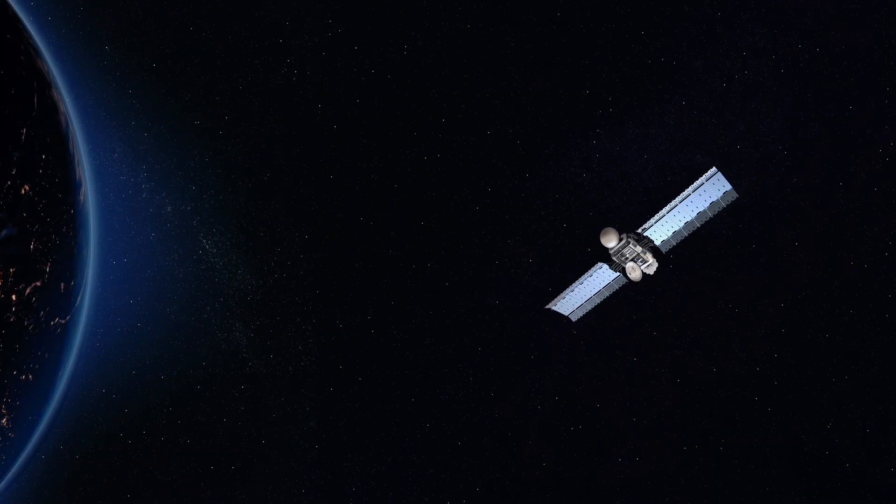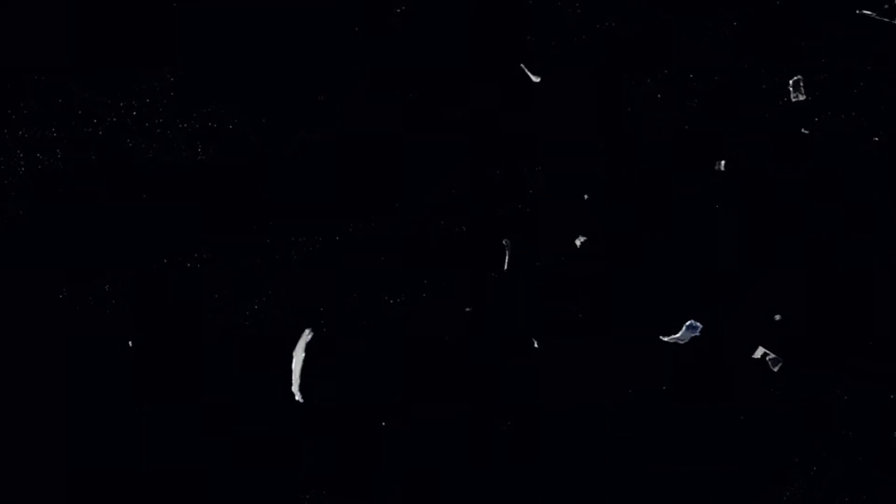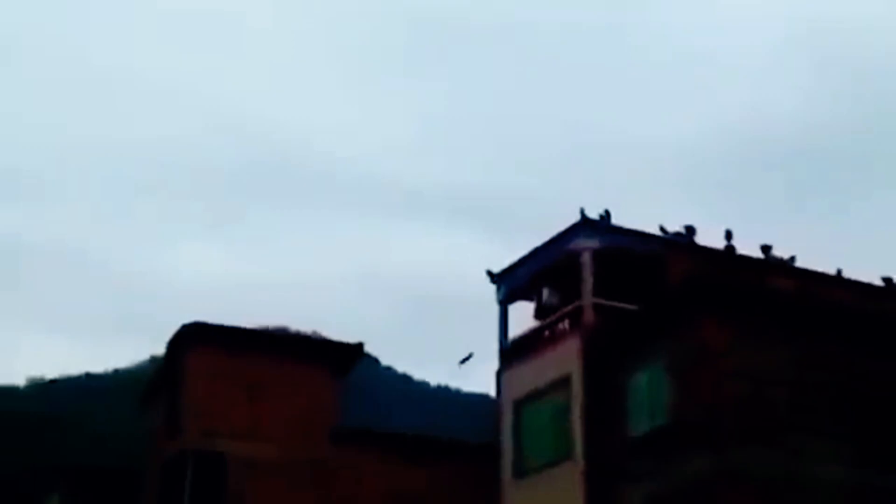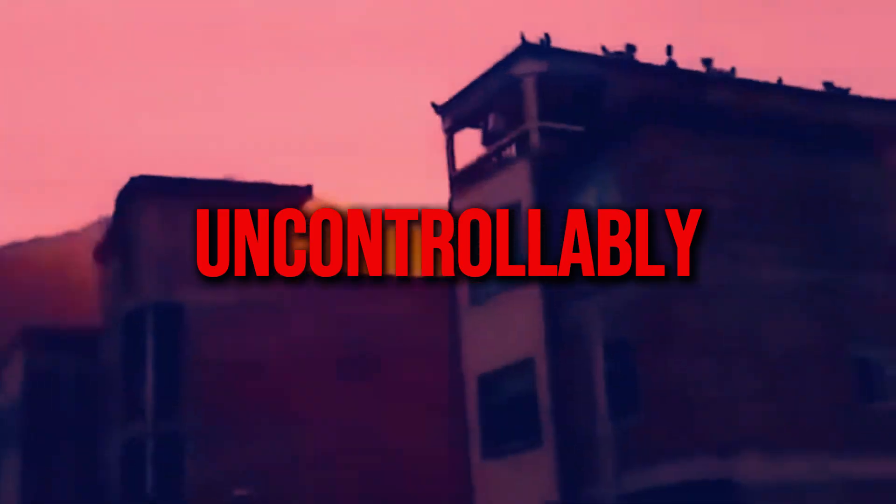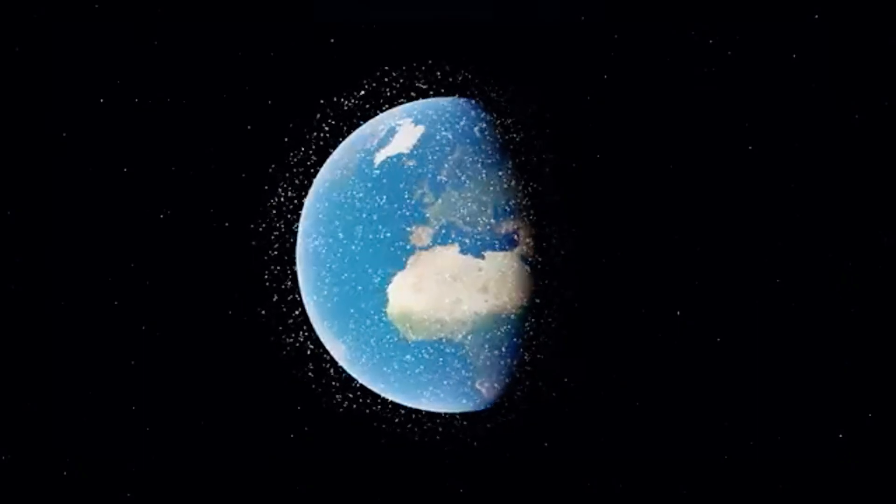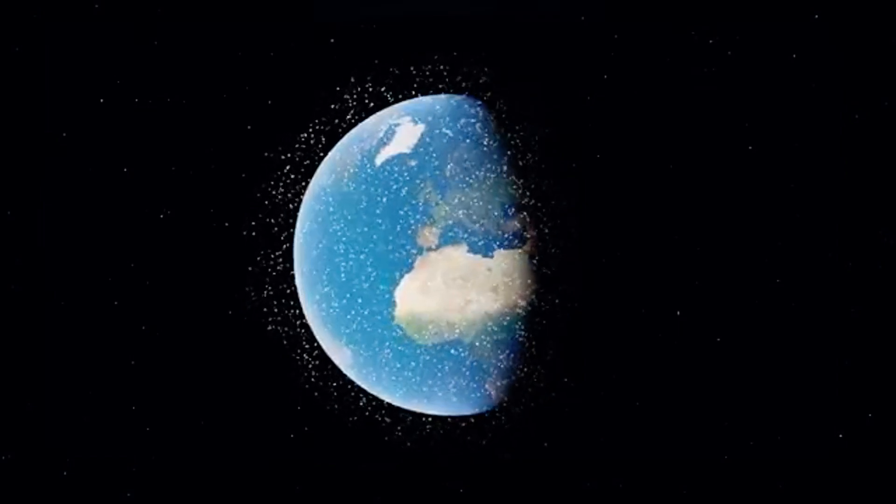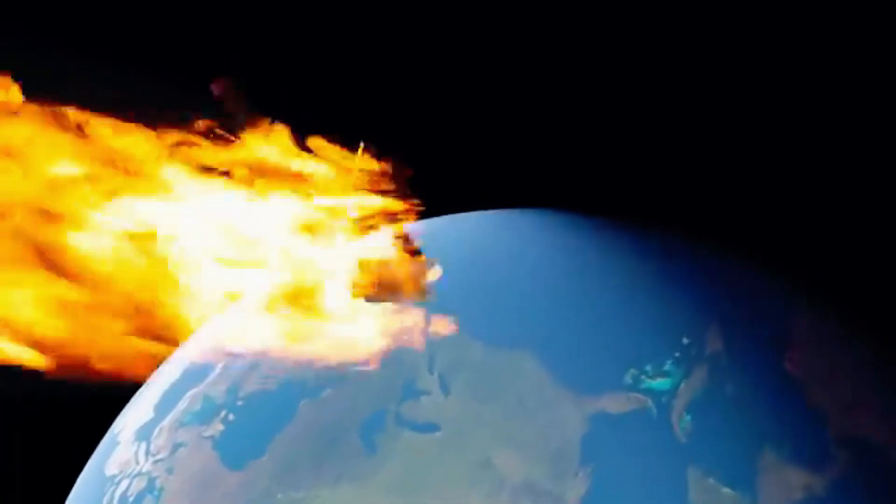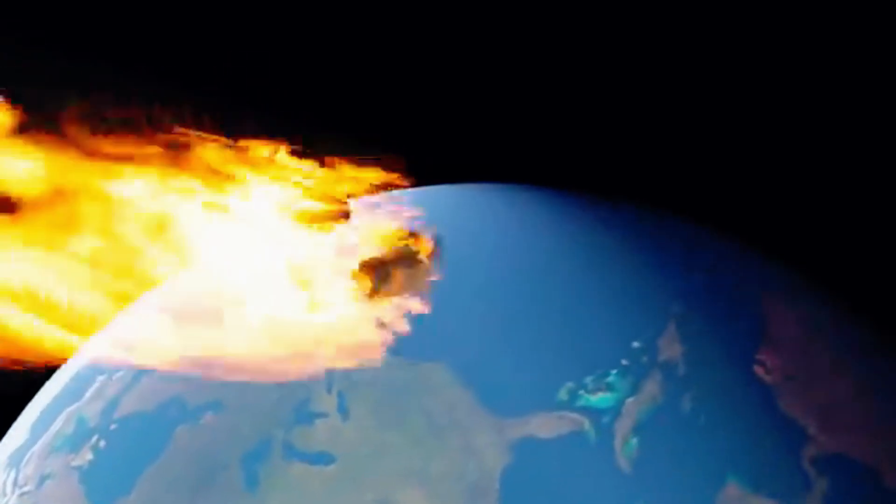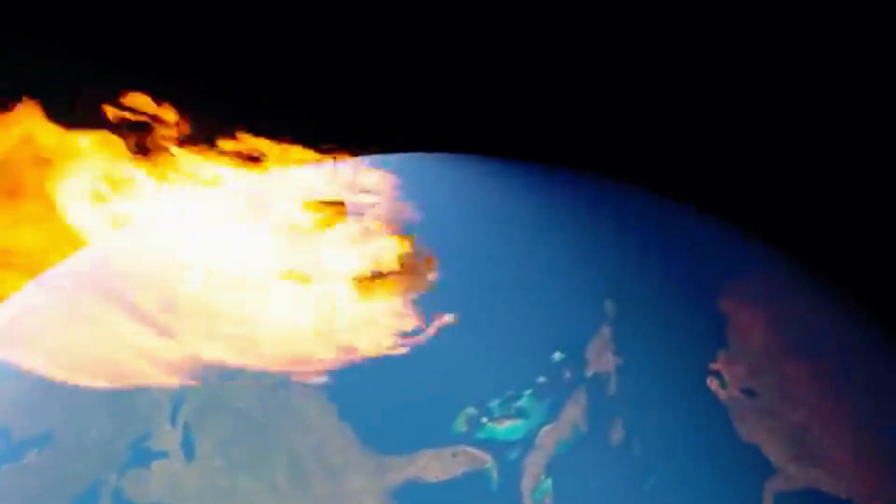Every day, Earth is bombarded by tiny bits of space dust. But what about something bigger? Thousands of defunct satellites, spent rocket stages, and space junk are circling our planet, and many of them are falling back to Earth uncontrollably. In the coming years, the risk of space debris re-entry is only increasing. Space agencies predict that by the 2030s, we'll see record numbers of objects crashing down, some large enough to cause serious damage if they hit the wrong place.